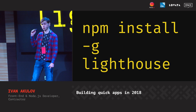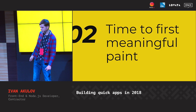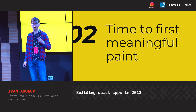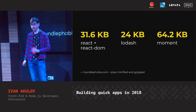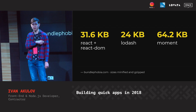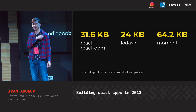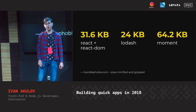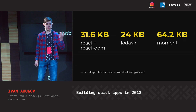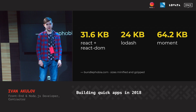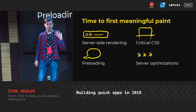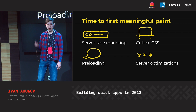Now let's get to how to actually build a quick app, starting with time to first meaningful paint. You have one second and 40 kilobytes. And 40 kilobytes is not a lot — most popular libraries take around 20, 30, or even more kilobytes minified and gzipped. So it's likely you won't be able to fit your whole app into those 40 kilobytes. Instead, you do different kinds of optimizations. In 2018, those optimizations are server-side rendering, critical CSS, preloading, and server-side optimizations.